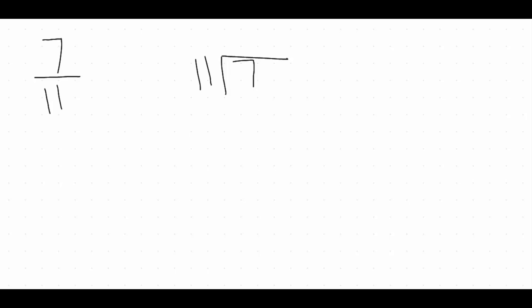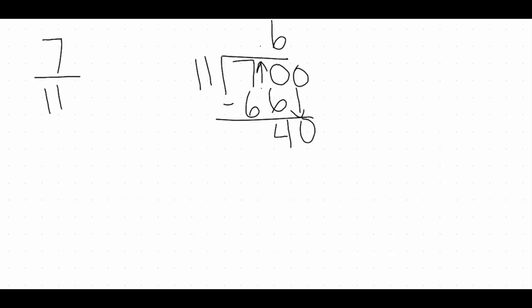Let's do one more example: the fraction 7 elevenths. We need to divide numerator by denominator, so we take 7 and divide by 11. Starting with 11 into 7 — 11 does not go into 7, so we add a decimal point and a 0, bringing the decimal point up in our answer. We divide 11 into 70: 11 goes into 70 six times, giving us 66, subtract to get a remainder of 4. We add another 0 and drop that down; 11 goes into 40 three times, giving us 33, subtract to get a remainder of 7. We need to keep adding a 0.